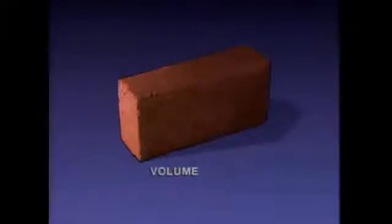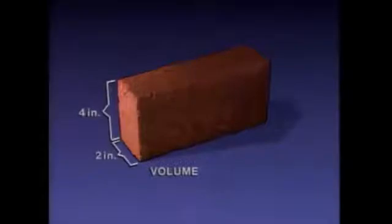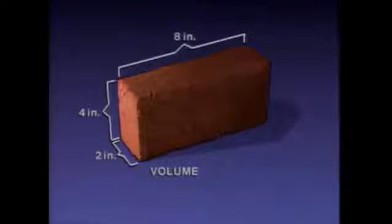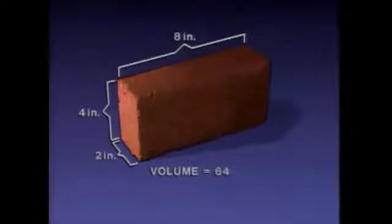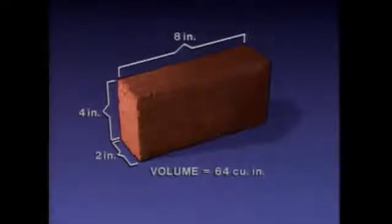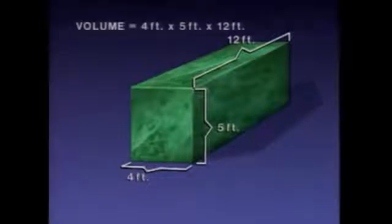The volume of a rectangular solid like this brick can be calculated by multiplying three length measurements together. As we just saw, this surface is two inches by four inches. The third measurement is eight inches, so two times four times eight equals sixty-four. Since volume is a three-dimensional measurement, it's usually expressed in cubic units — in this case, cubic inches. Cubic feet and cubic yards are also common units of volume and are calculated the same way.